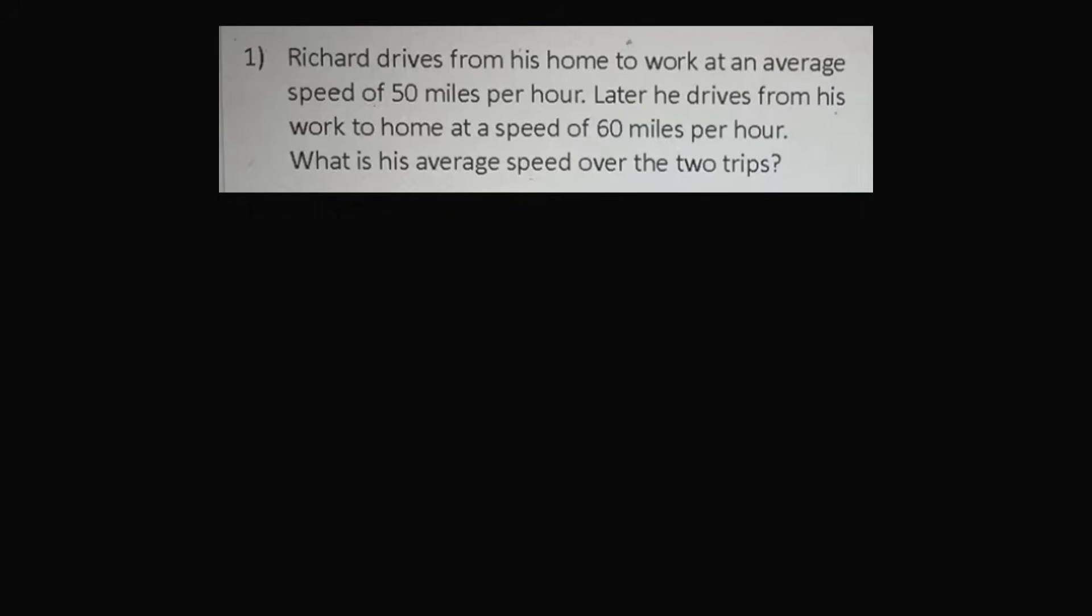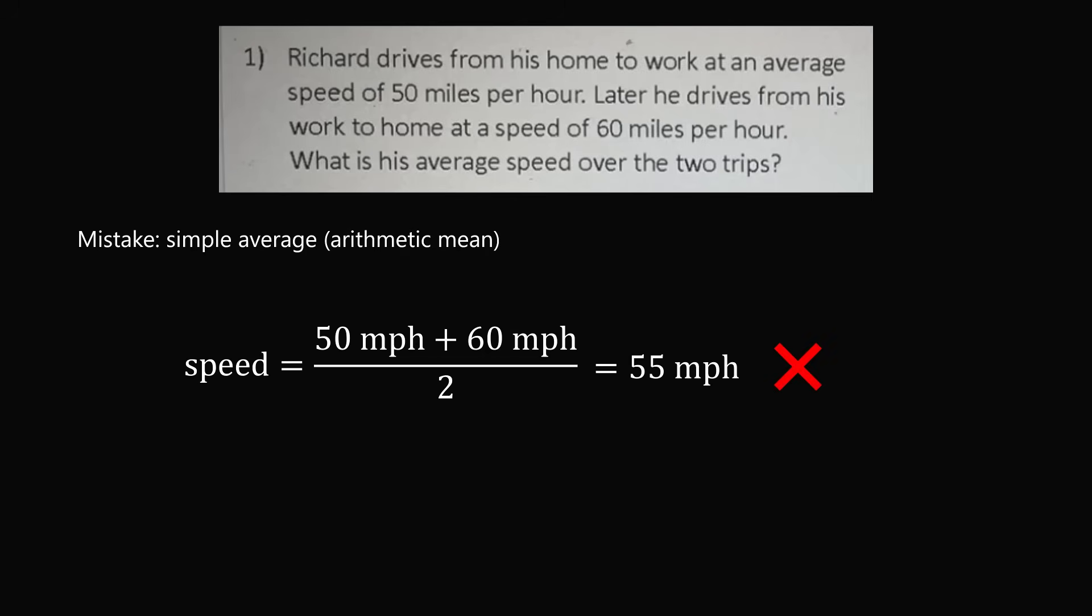Many people had confusion and they were actually taking the simple average of the two speeds. So you might think you could take the average speed just by taking one half of 50 plus 60 and getting to a speed of 55 miles per hour. But this is definitely wrong. When you average speeds, you have to take into account the time that you take with each speed.